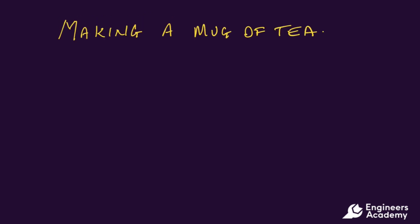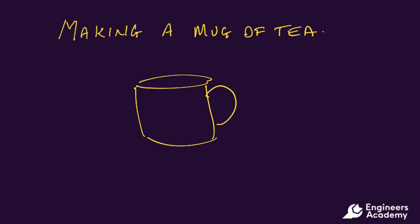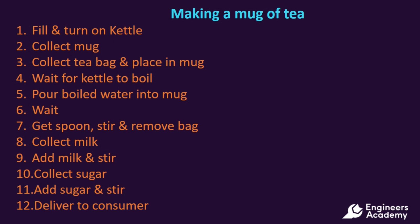Now we have looked at categories of work, let's turn our attention to something I hope we all know: the task of making a mug of tea. Here we have listed 12 typical steps that we may take to make a mug of tea. First, we would fill the kettle with water and turn on the kettle for it to boil.